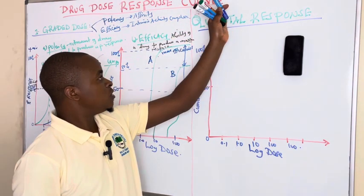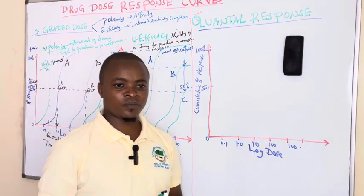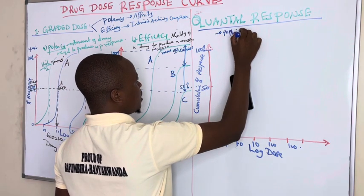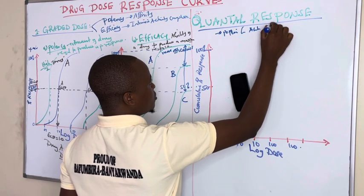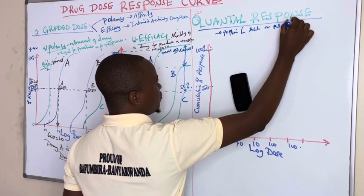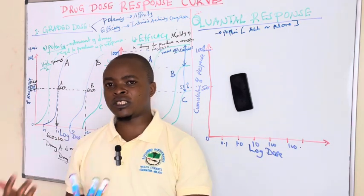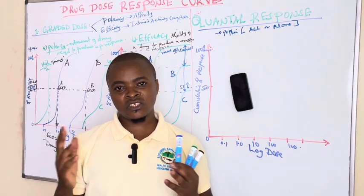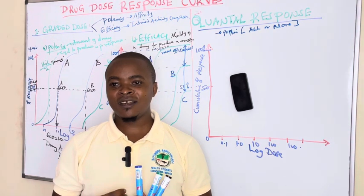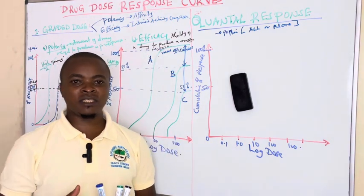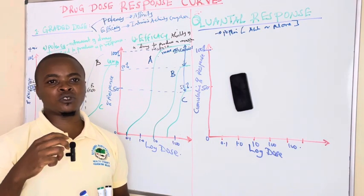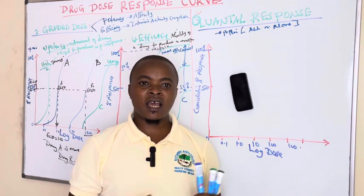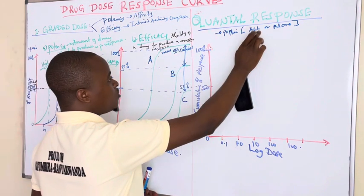The second type of dose-response curve is the quantal response curve. These experiments are done in a population and depend on the law of all-or-none response: when you give a drug to a population, it either produces a response or no response at all. For example, if someone is vomiting and I give a drug — it either stops the vomiting (full response) or it does not (no effect). Similarly, a sedative either makes you sleep or it does not — all-or-none.